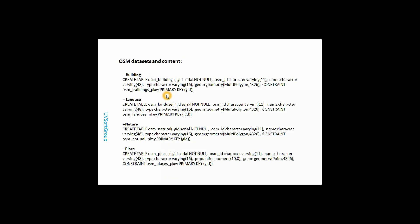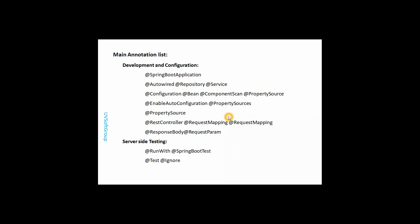The OSM buildings dataset contains name, type, and geometry fields. The geometry field is the most important part when working with mapping tools like Google Maps or OpenStreetMap. Regarding the annotations I will use in the implementation — these will be covered in detail in the next screencasts, including Spring Boot testing, JUnit, and Java unit testing annotations.